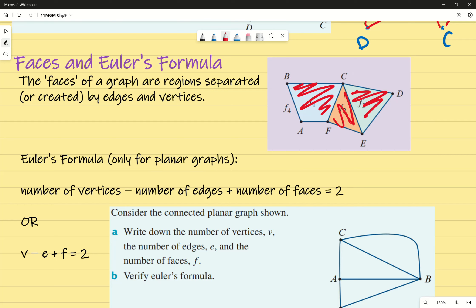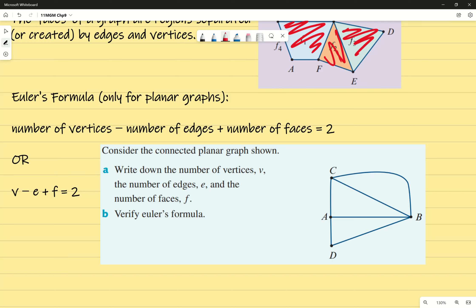Let's prove it. Consider the connected planar graph shown. The first thing I would do is double-check that it is planar, because this formula only works when it's planar. Write down the number of vertices, edges, and faces, commonly shortened by their corresponding first letters. Number of vertices?